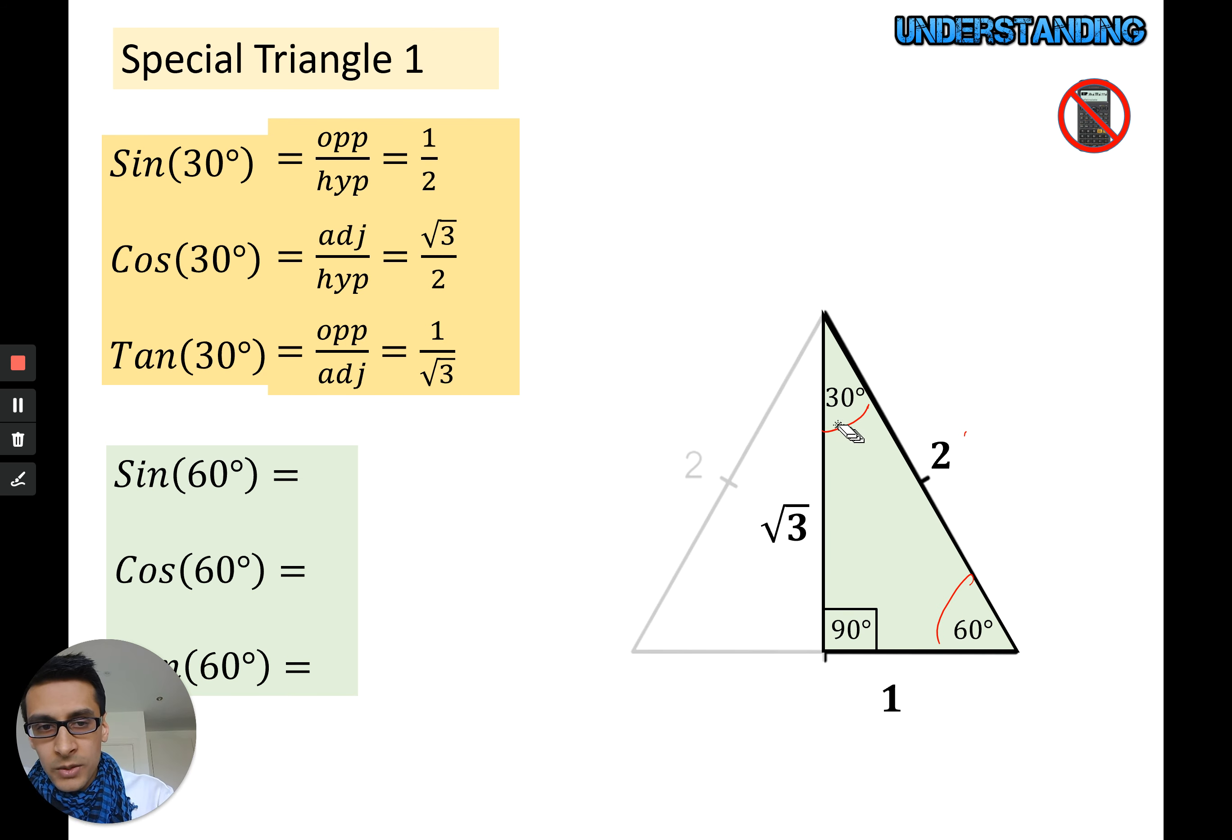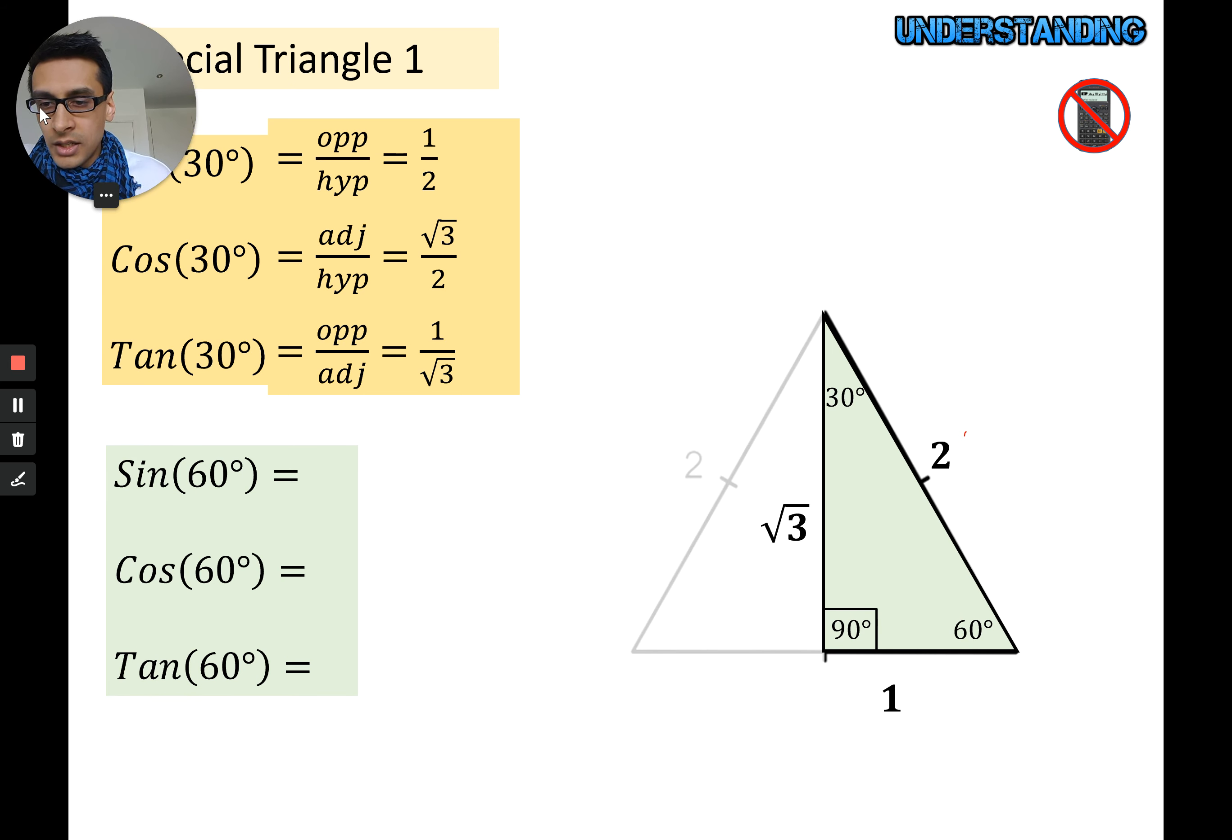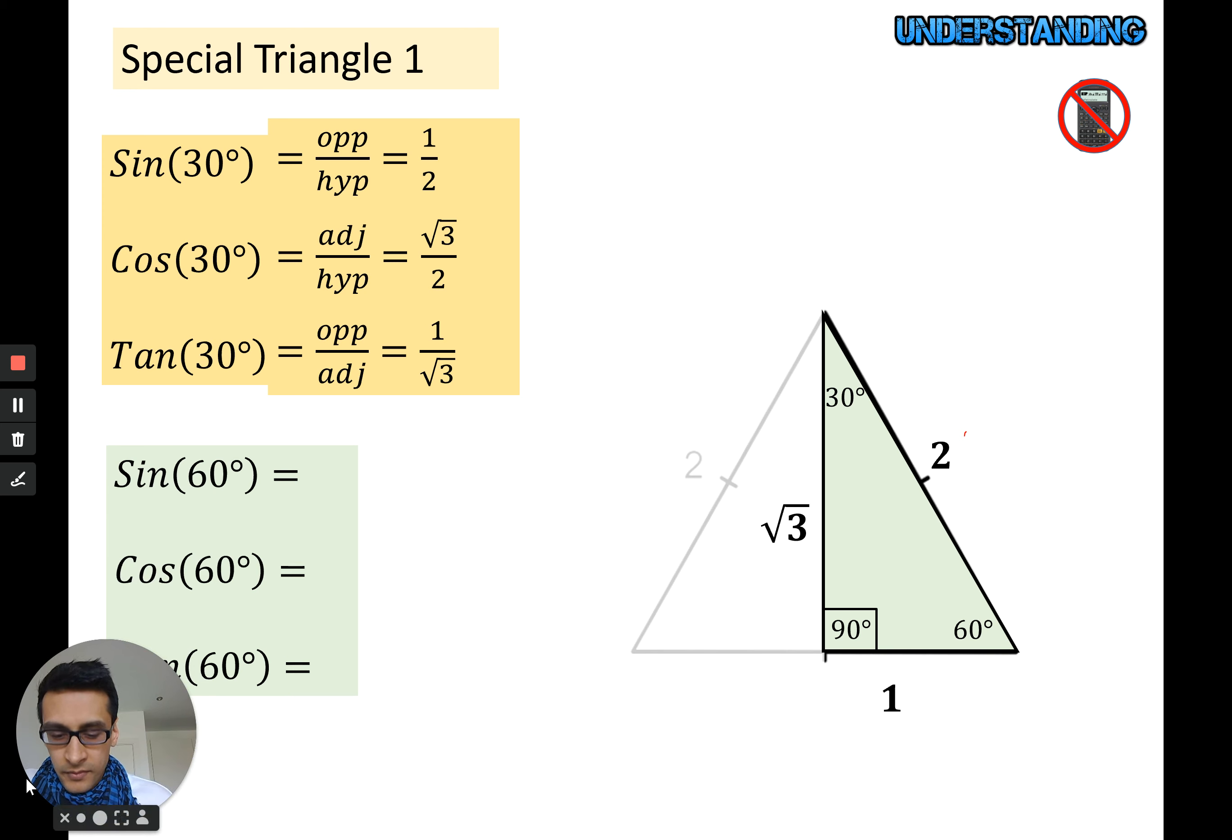For the 60 degree angle you do the same thing. So pause the video and work out sine 60, cos 60, and tan 60, and then replay the video. Okay, so you should have got the following values: root 3 over 2, 1 over 2, and root 3 over 1, which is just root 3.